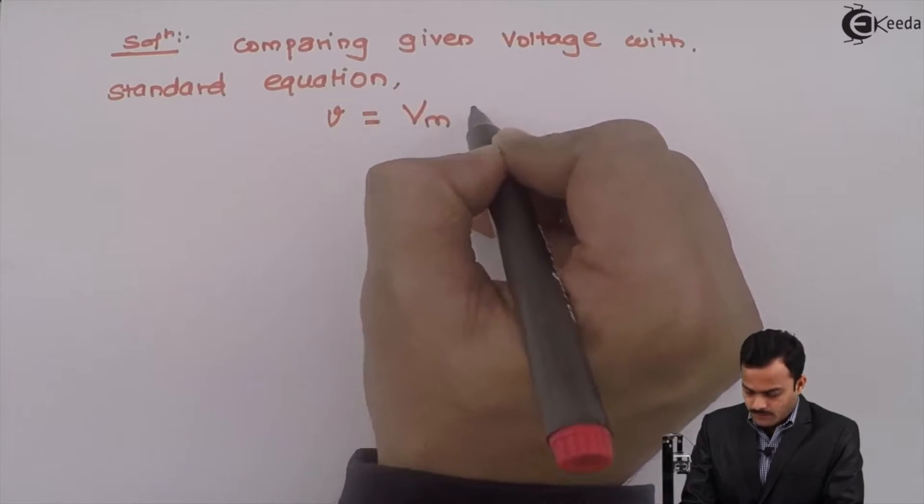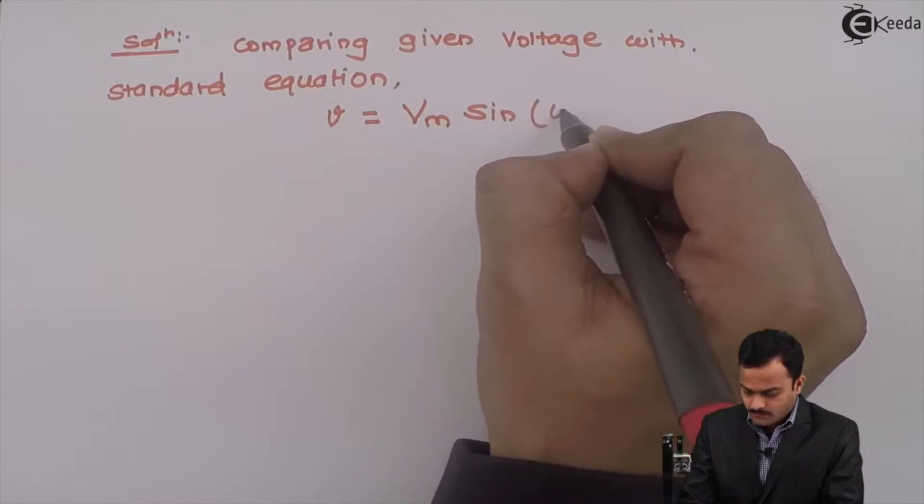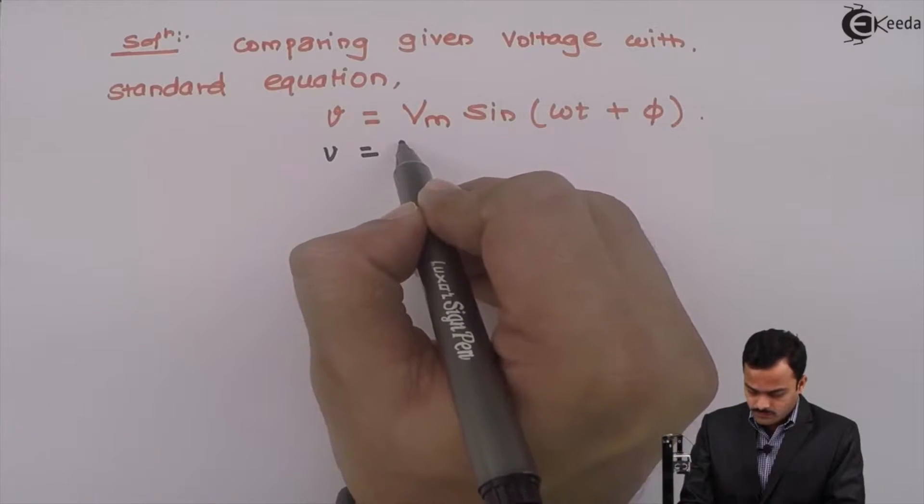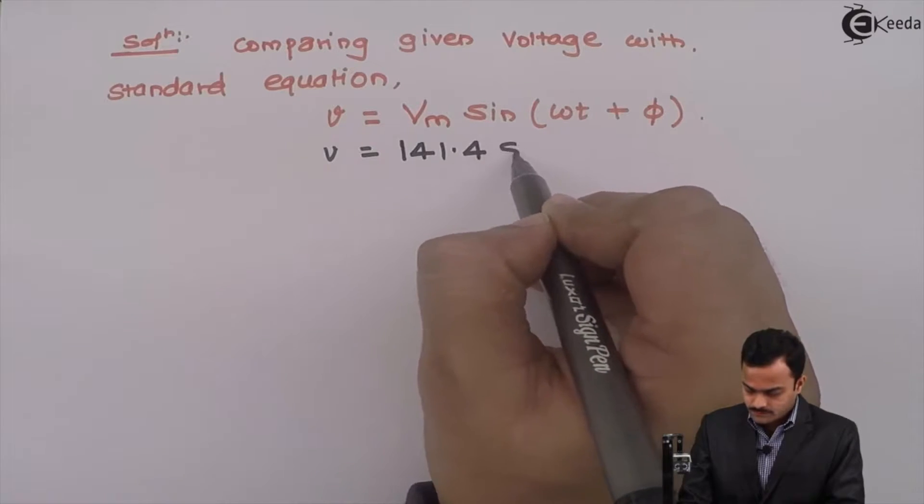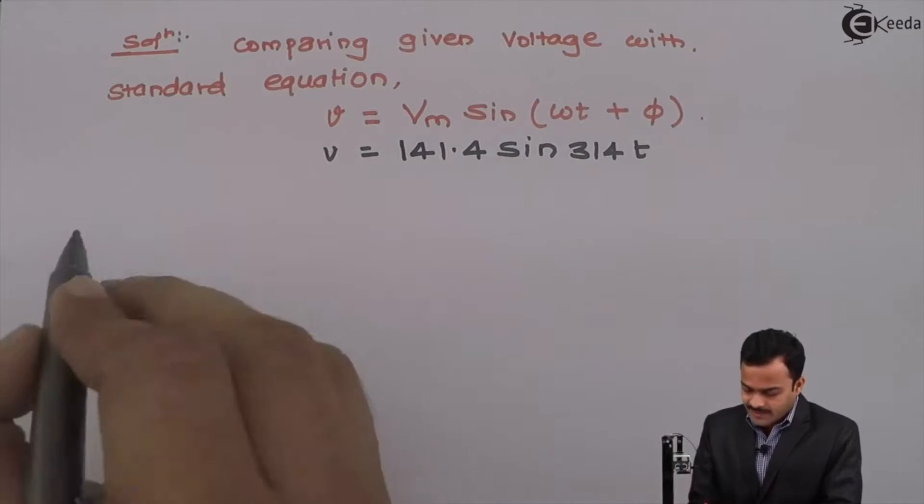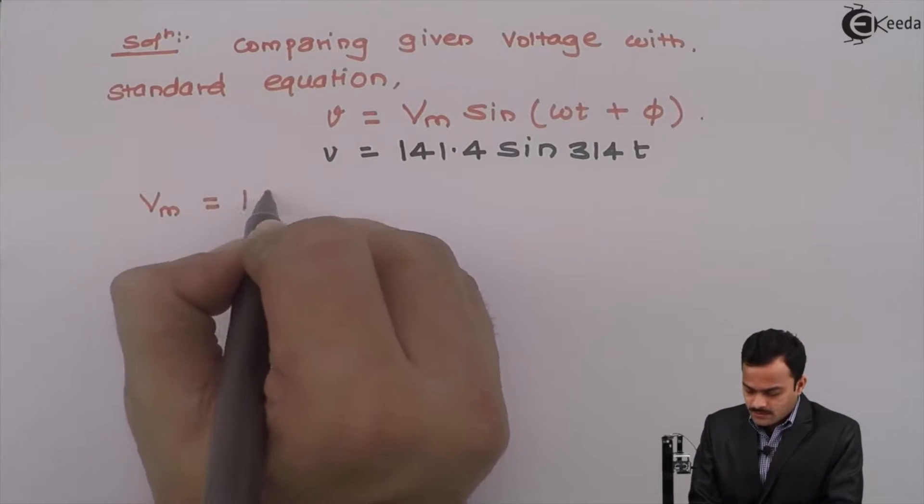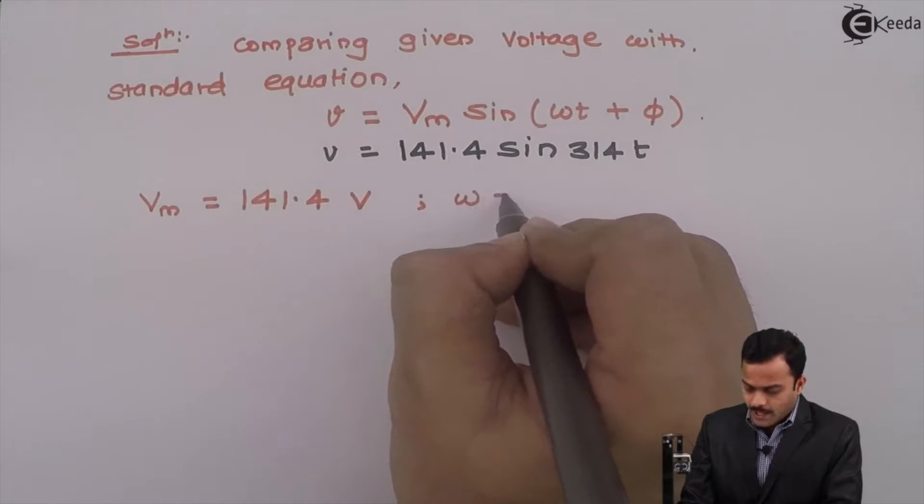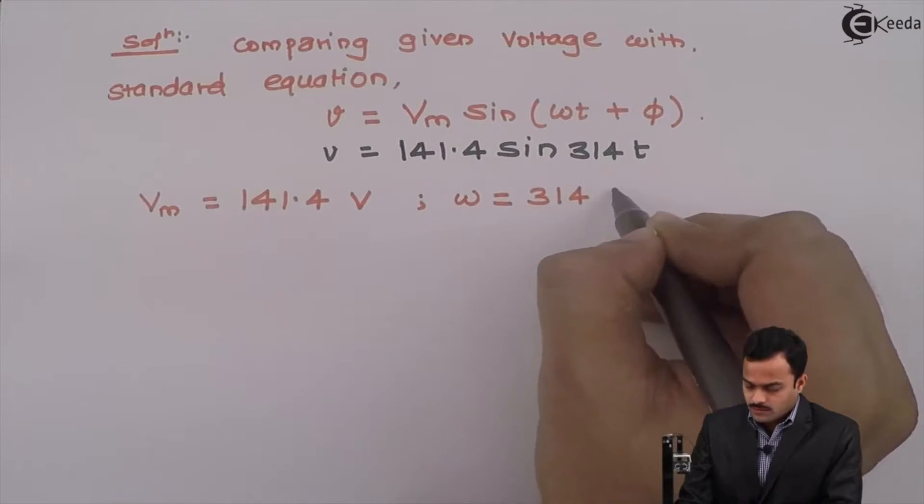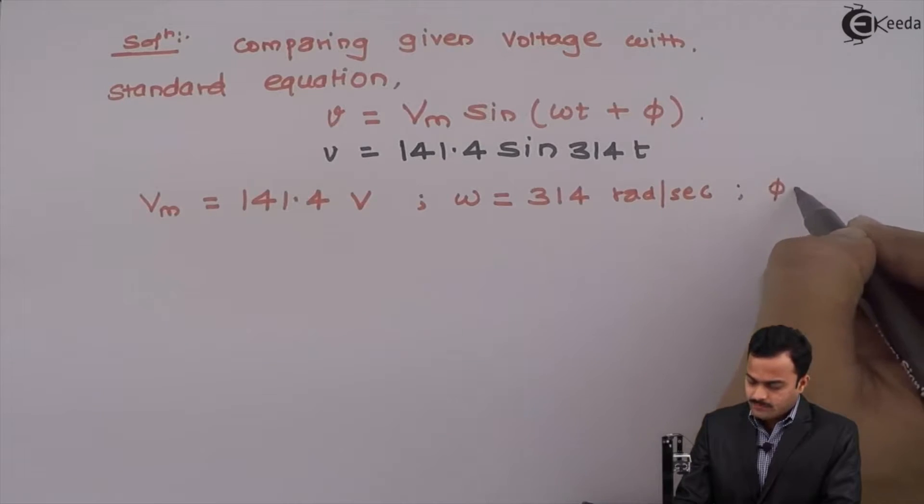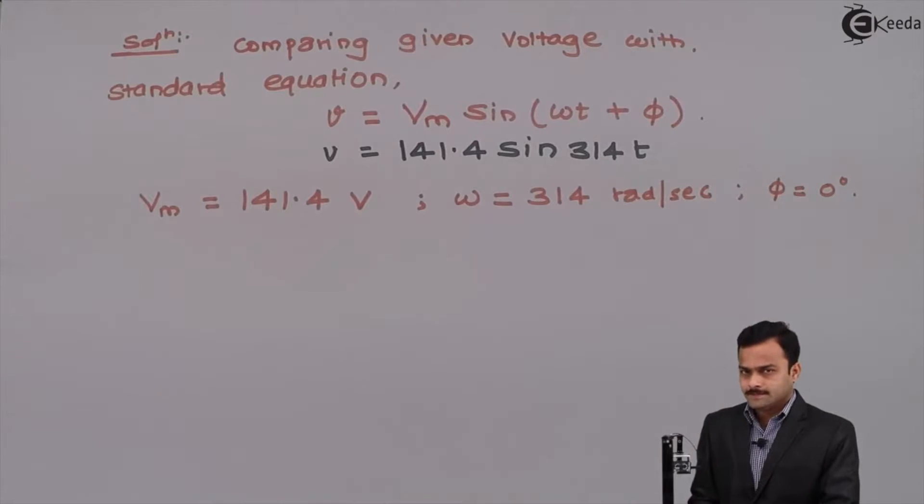V equal to Vm sin omega t plus phi. If I compare the equation given is Vm as 141.4 sin 314T. If I compare what I will get? Vm as 141.4 volt, omega angular frequency 314 radian per second and here phi they have not given. Phi is a phase angle, still we will compare and write phi is 0 degree.